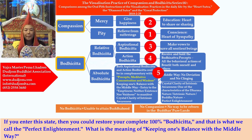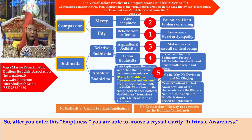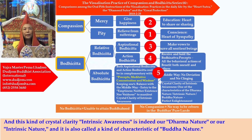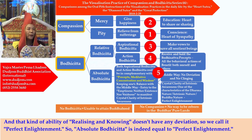After you enter this emptiness, you are able to arouse a crystal clarity of intrinsic awareness. This crystal clarity of intrinsic awareness is indeed our dharma nature, or our intrinsic nature, and is also called the characteristic of Buddha nature. That kind of ability of realizing and knowing has no deviation, so we call it perfect enlightenment.